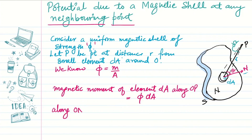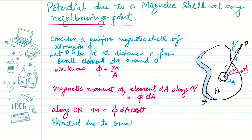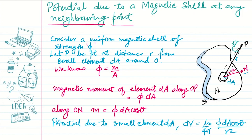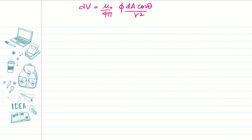If we find the magnetic moment along the normal n, this will be a projection, so the magnetic moment becomes φ·dA·cosθ. We can write the potential due to this small element dA as dV = (μ₀/4π) · (φ·dA·cosθ) / r². This is the potential due to our small element.